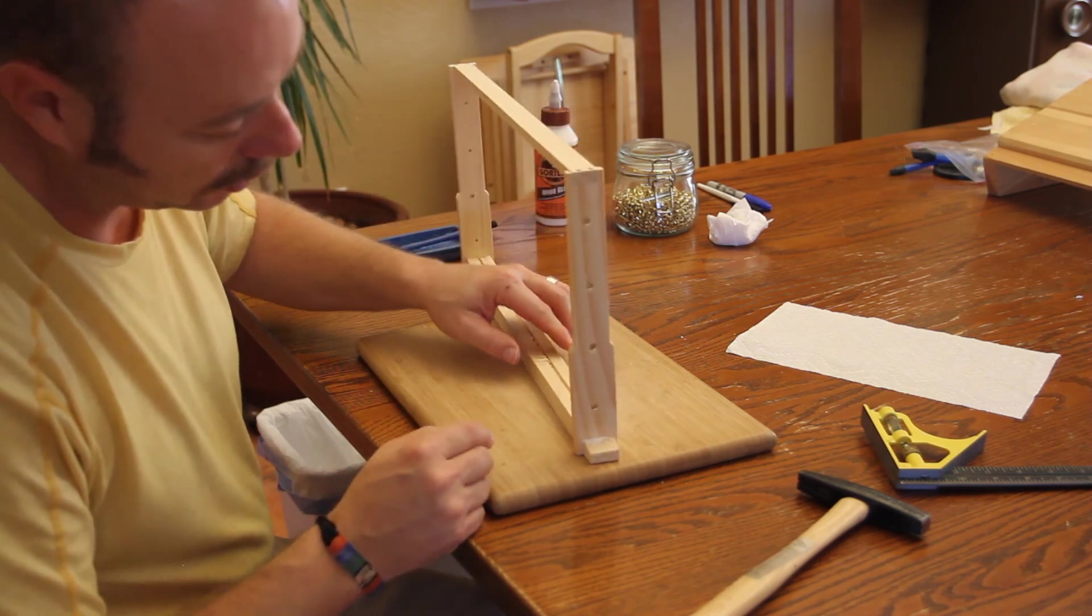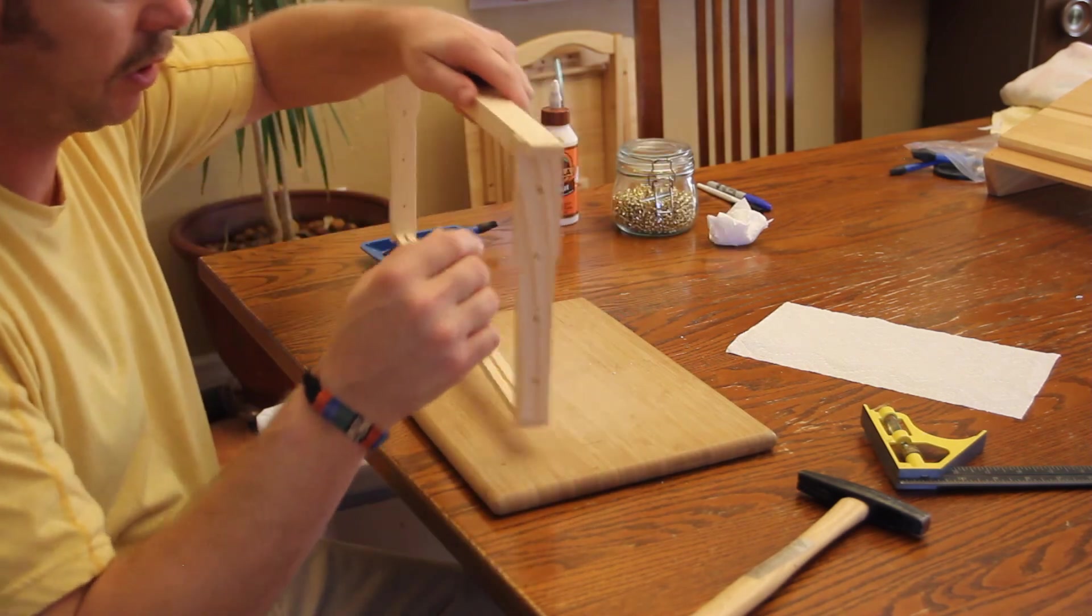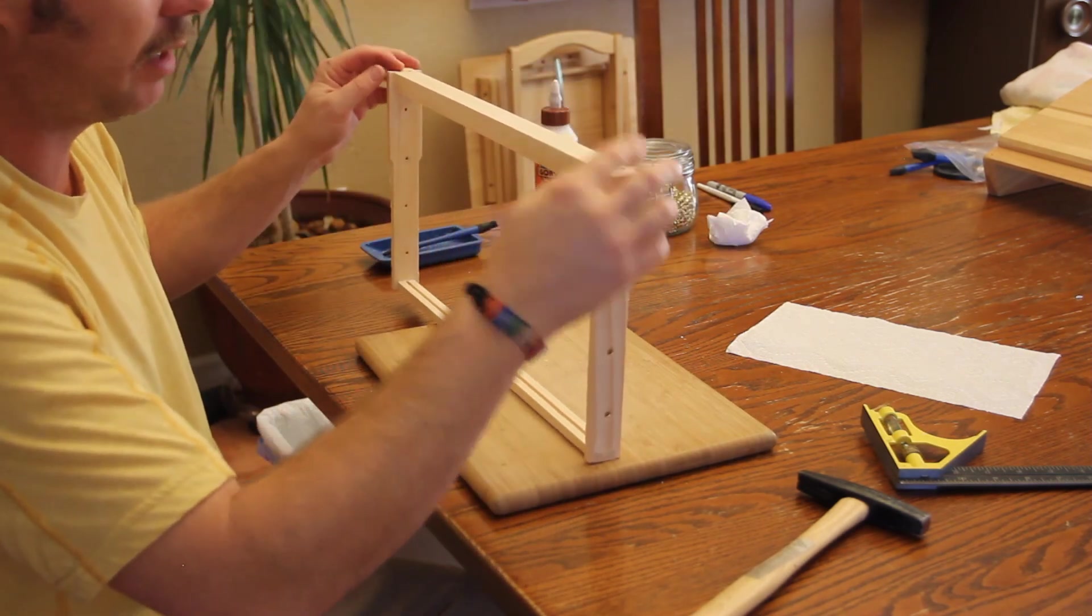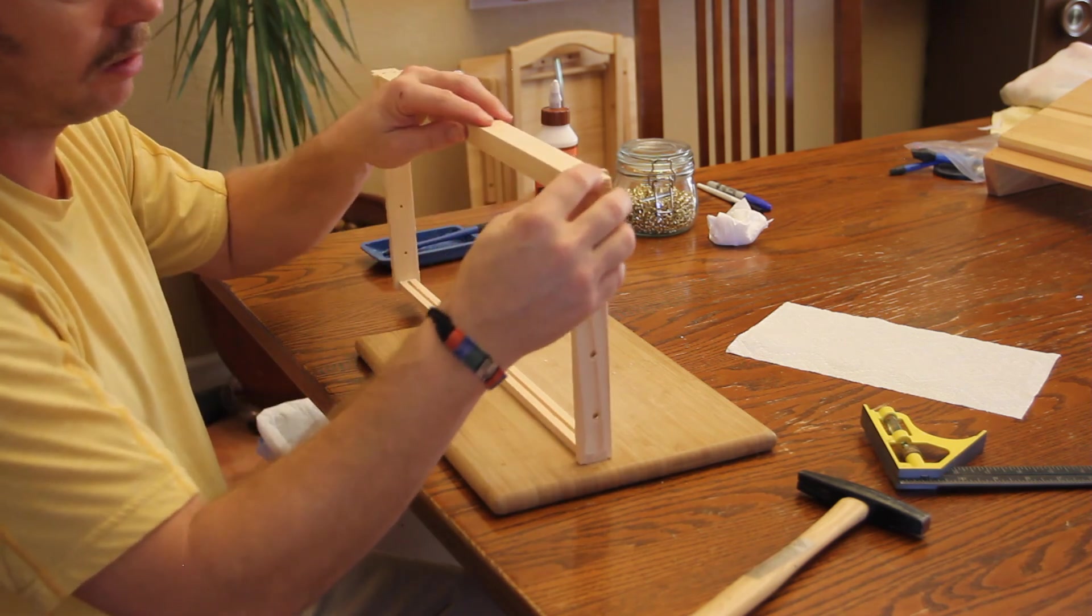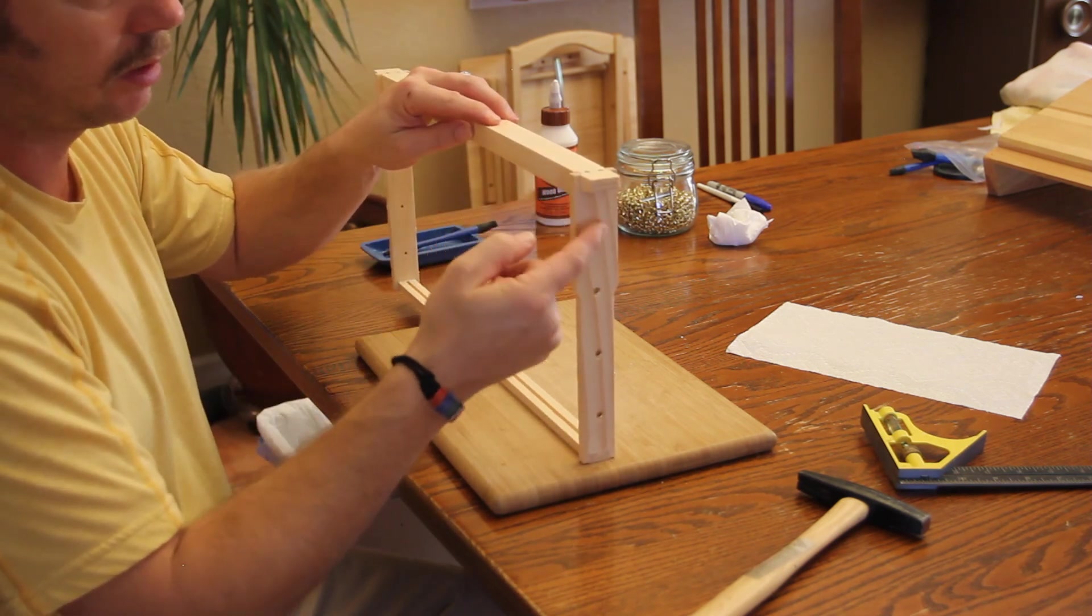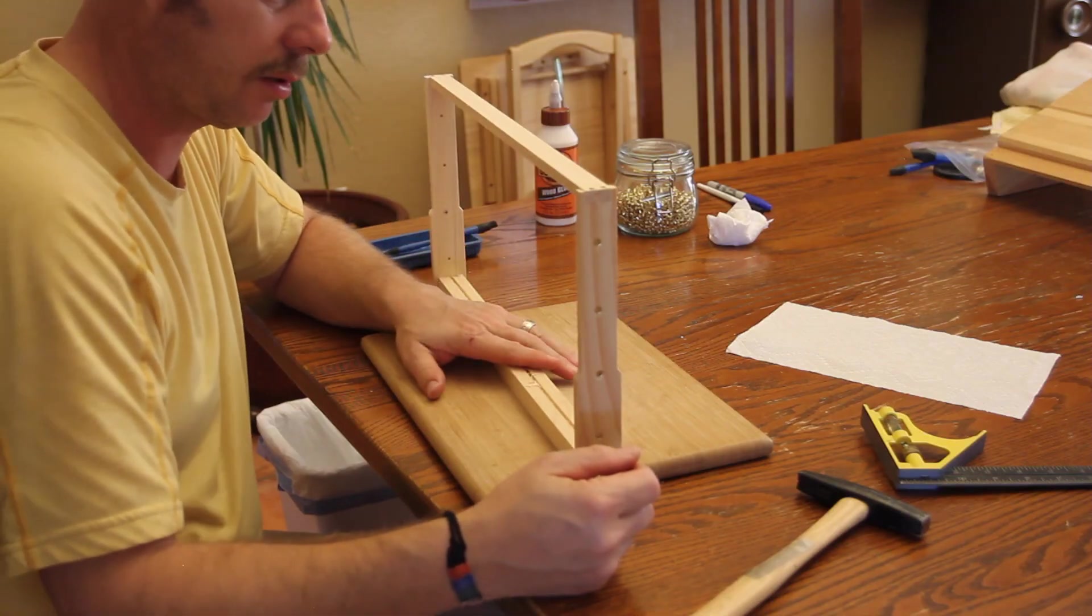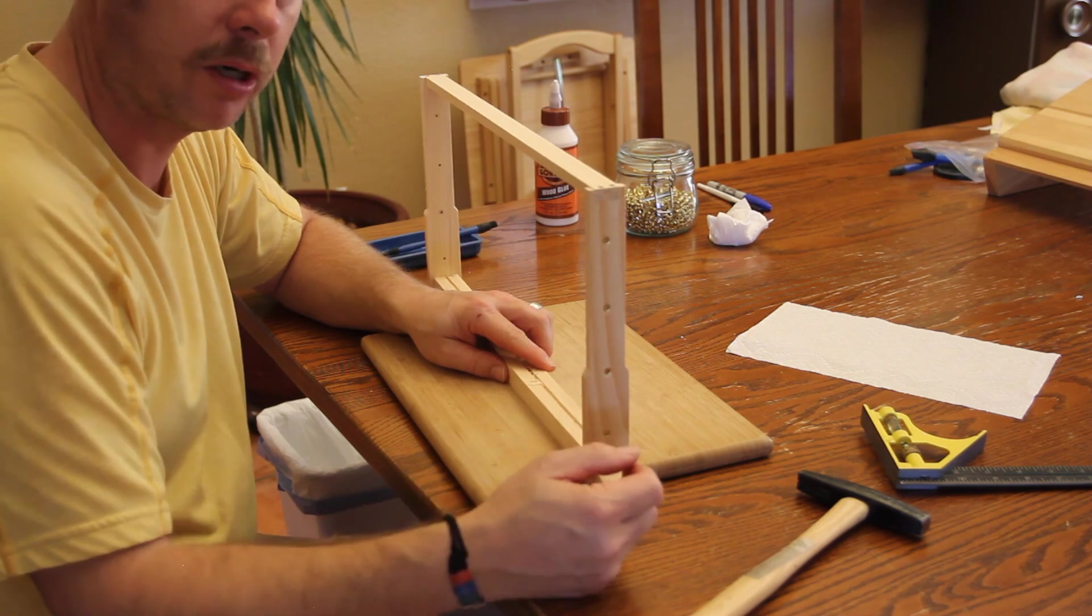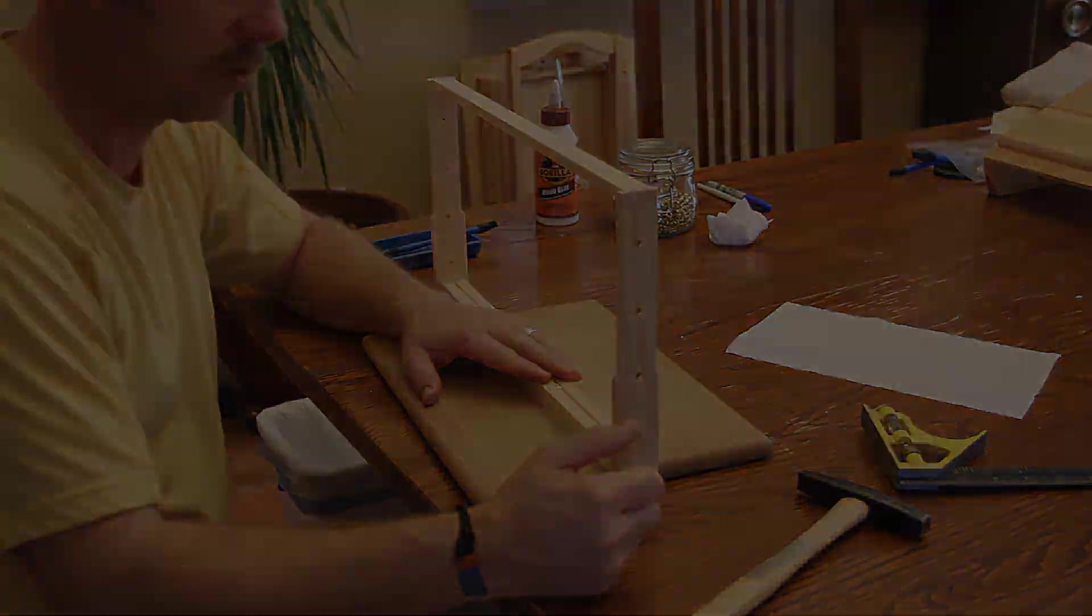If you do that, it strengthens the frame so that when it's in the hive and you're prying up on this top bar to lift the frame out, it's much harder for it to come loose here. So that's the frame-making part. Now we'll move on to wiring it—cross-wiring.